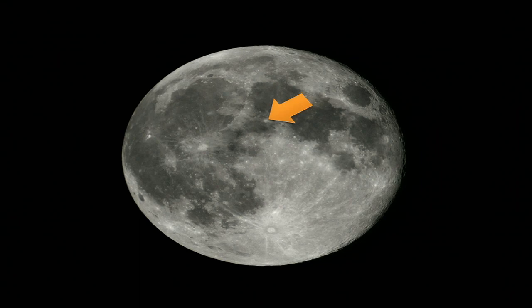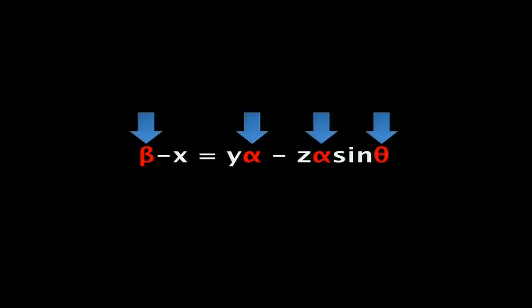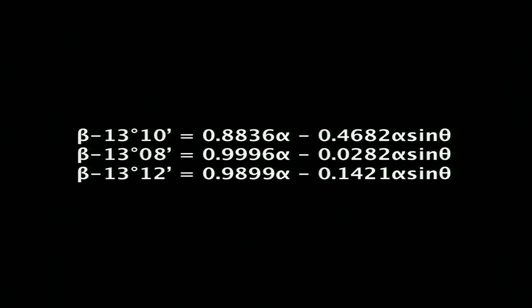Mayer sat down and did a whole bunch of spherical trigonometry to describe that motion, arriving at this equation, which might look frightening. All you need to know is that x, y, and z are quantities he could measure by looking at the face of the moon, while alpha, beta, and theta are unknown quantities he was trying to estimate. A simple strategy from high school math: if you observe x, y, and z on three separate occasions, you get three equations in three unknowns, and you can use basic algebra to solve for alpha, beta, and theta.